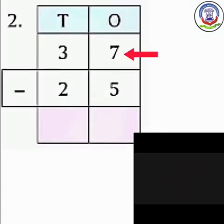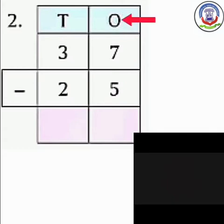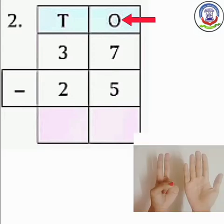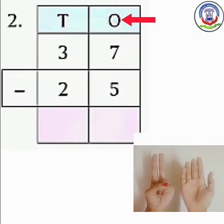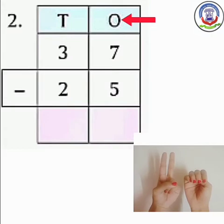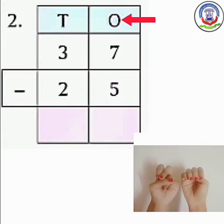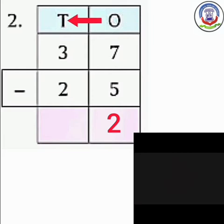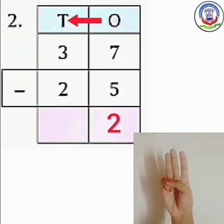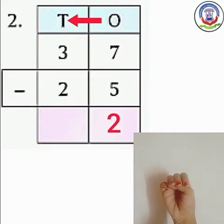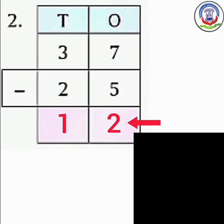Next, number 2: 37 minus 25. पहले हम ones column से subtract करेंगे. Numbers are 7 and 5. Open 7 fingers and close 5 fingers. How many fingers are left? 1, 2. So we will write here 2. अब हम 10s column में subtract करेंगे. Numbers are 3 and 2. Open 3 fingers and close 2 fingers. How many fingers are left? 1. So we will write here 1. The difference is 12.